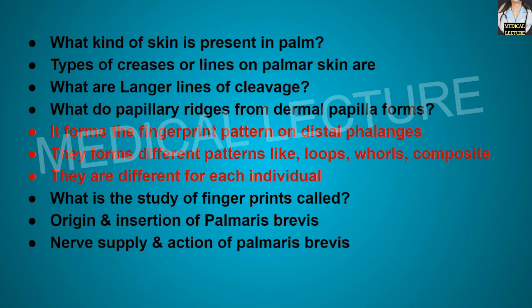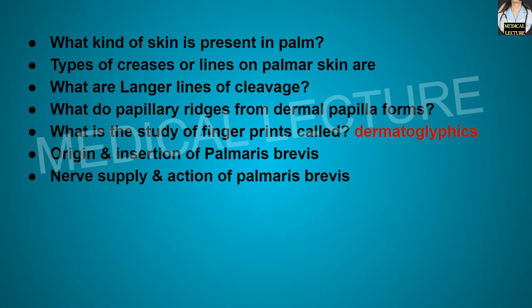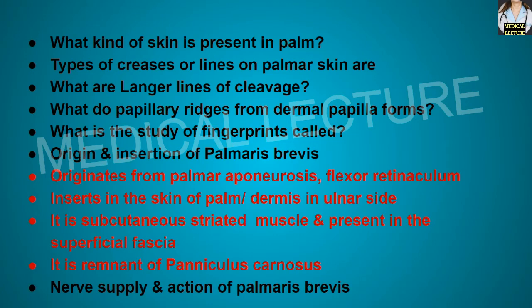What is the study of fingerprints called? It is called dermatoglyphics. Origin and insertion of the palmaris brevis muscle: it originates from the palmar aponeurosis and flexor retinaculum, and inserts into the skin of the palm on the ulnar side. It is a subcutaneous striated muscle present in the superficial fascia and is the remnant of the panniculus carnosus.